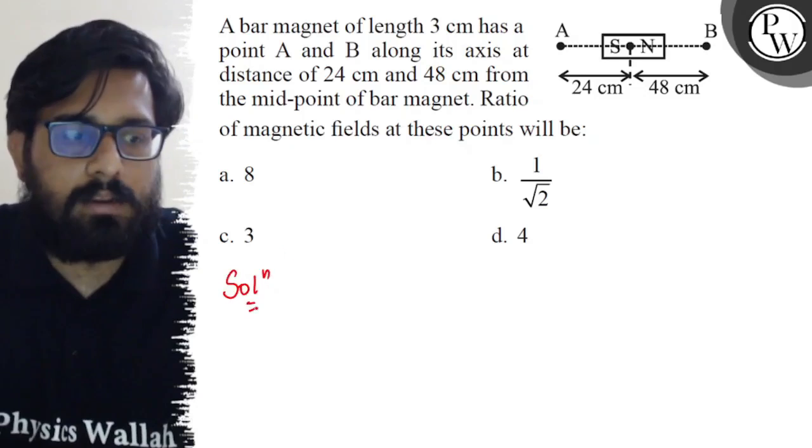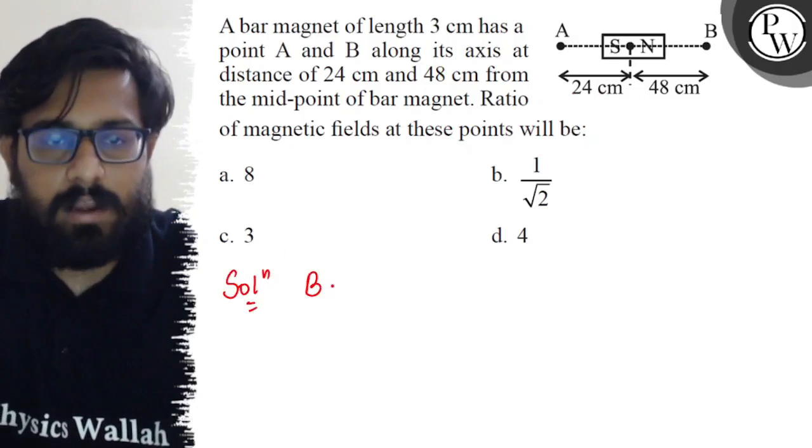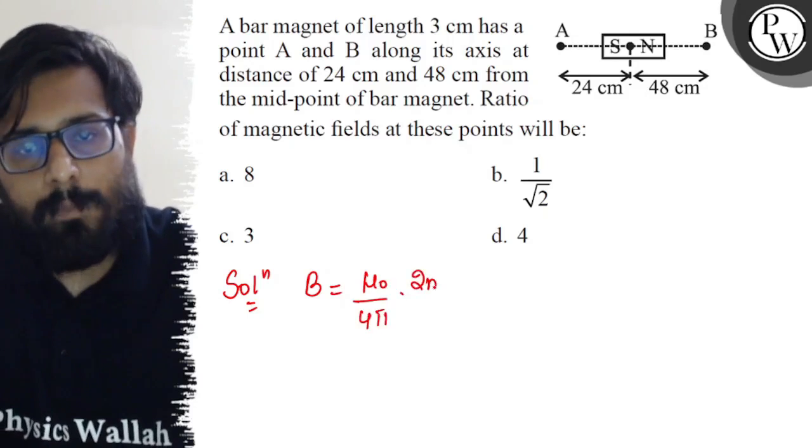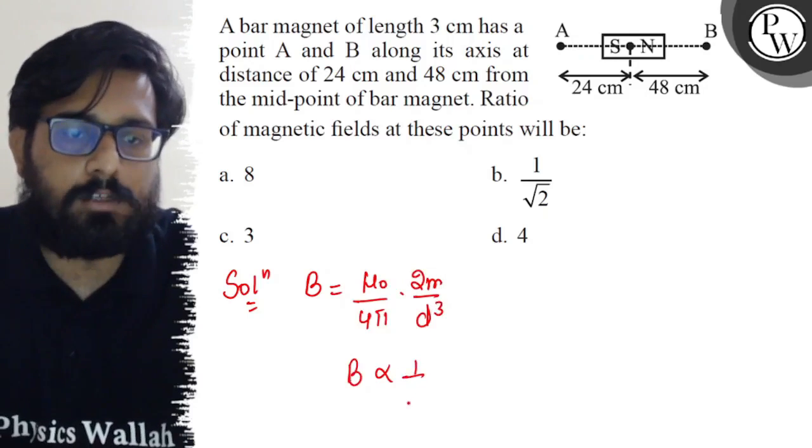So from the formula, you can write down that for the axial position it comes out to mu naught upon 4 pi, 2m by d cube. So from here the value of B is inversely proportional to d cube.